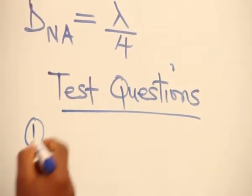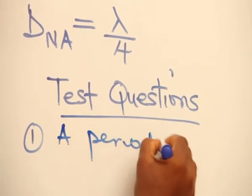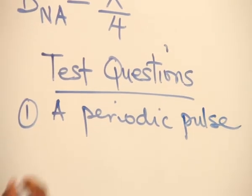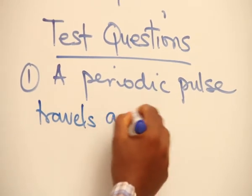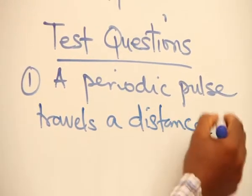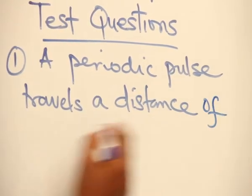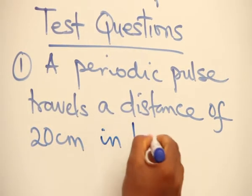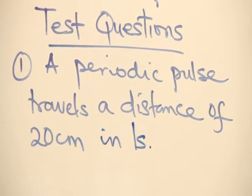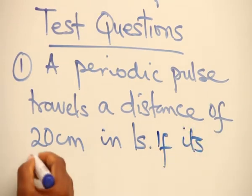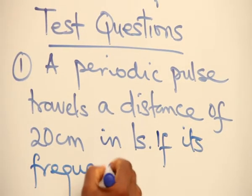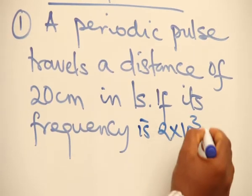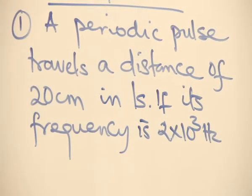A periodic pulse travels a distance of 20 cm in 1 second. If its frequency is 2 times 10 raised to the power 3, calculate the wavelength of the pulse.